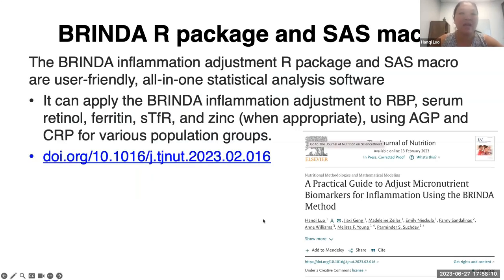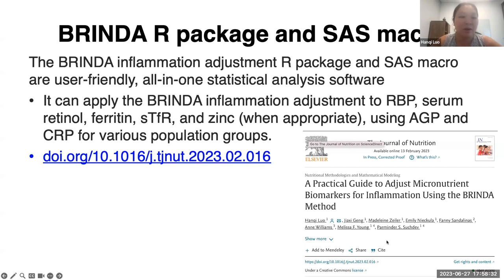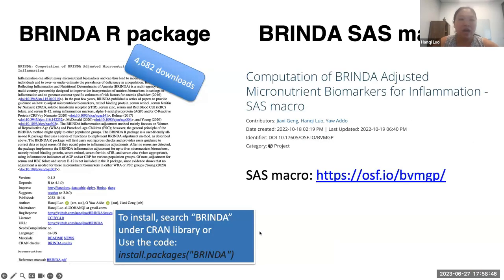The BRINDA inflammation adjustment R package and SAS macro are user-friendly, all-in-one statistical analysis software. They can apply the BRINDA inflammation adjustment to retinol binding protein, serum retinol, ferritin, sTfR, and zinc, using AGP or CRP appropriately for various populations. This paper is published in the Journal of Nutrition, and the DOI is shown here.